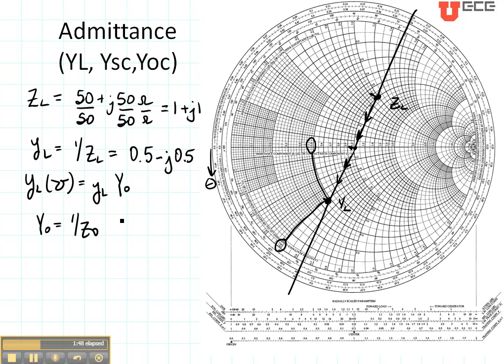So YL is going to be equal to 0.5 minus j0.5. And then we need to multiply by 1 divided by 50, and that's going to give us the value in mhos. And that's equal to 0.01 minus j0.01 mhos. That's our YL.